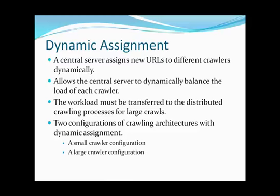With Dynamic Assignment, the systems can also add or remove download processors. However, the central server may become the bottleneck, so most of the workload must be transferred to distributed crawling processors for large crawls. There are two configurations: a small crawler configuration with a central DNS resolver, central queues per website, and distributed downloaders; and a large crawler configuration in which DNS resolvers and the queues are also distributed.